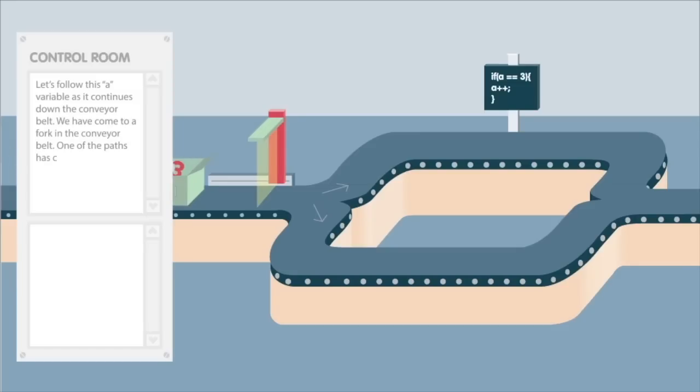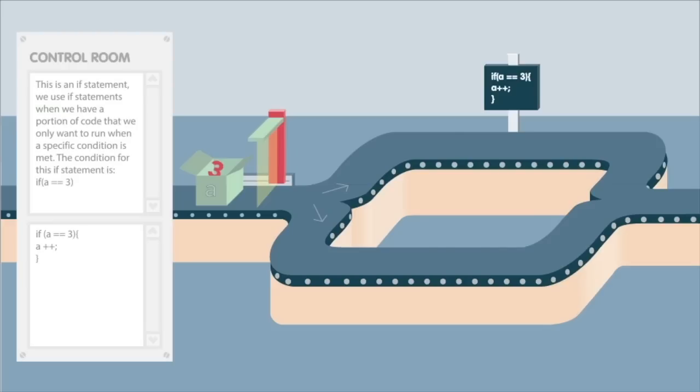We have come to a fork in the path. One of the paths has code on it and the other does not. This is an if statement. We use if statements when we have a portion of code that we only want to run when a specific condition is met.